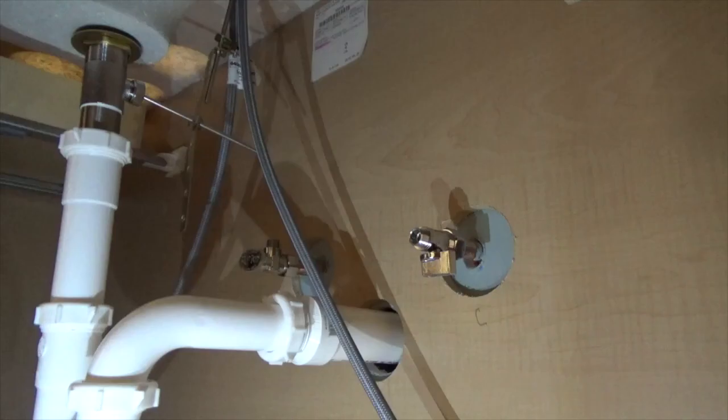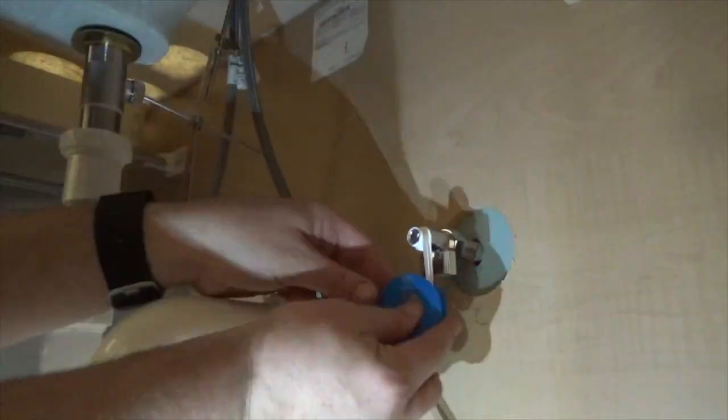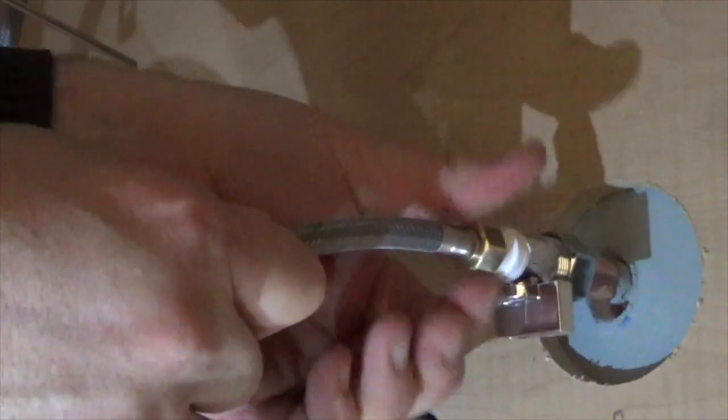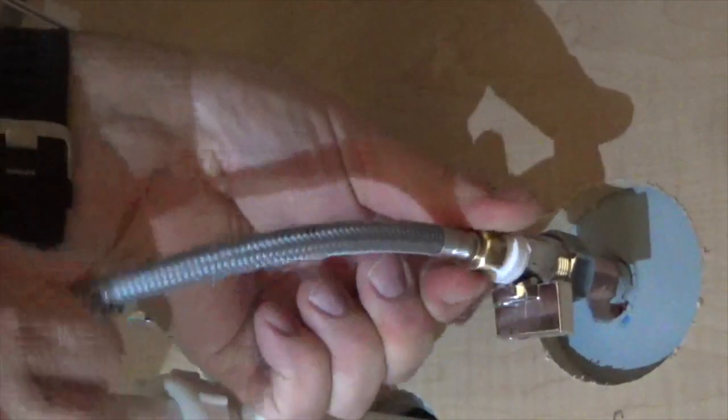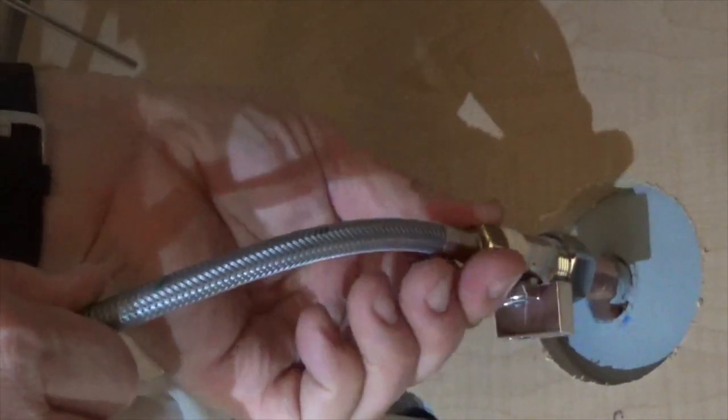Next, I'll attach the supply lines to the water valves. Prepare the valves by wrapping the threads with Teflon tape. Thread the supply lines on by hand. Each line should be marked hot or cold with a color code or with a tag.